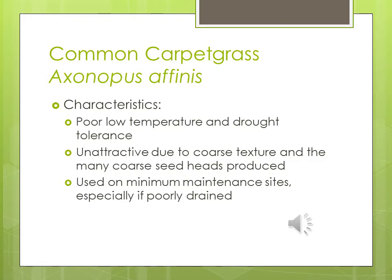Common carpet grass: poor low-temperature and drought tolerance, unattractive due to coarse texture and many coarse seed heads. Used on minimal maintenance sites, especially if poorly drained. If you have a client with a wet, soggy site and want a warm season grass, this is the grass you'd want to use.